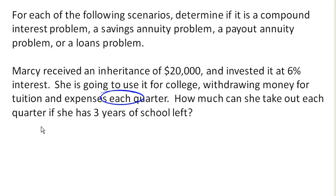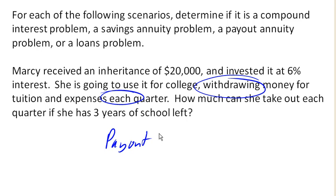Since she's making regular withdrawals, we know that this has to be some sort of annuity-type problem. Because she's taking money out, we know that this must be a payout annuity. The other clue here is that the money she has, she has at the beginning, not at the end. So she has money at the beginning and she's taking it out regularly — that's a payout annuity.